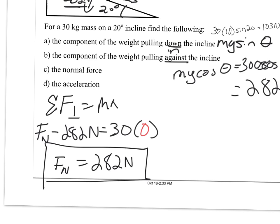When we simplify this out and do some math, we end up with our normal force of 282 newtons. Again, many, many times it is going to be equal to mg cosine theta. But I won't say it always will.